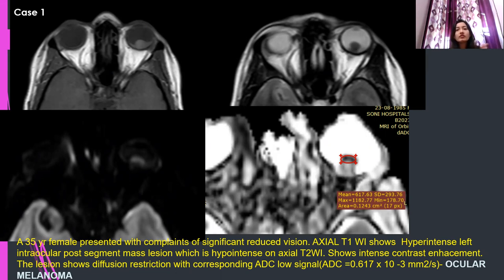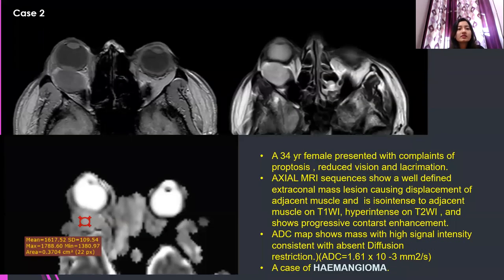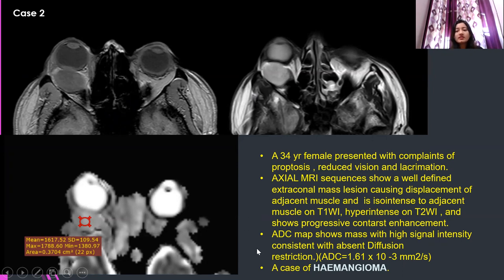Case 2: a 34-year-old female presented with complaints of proptosis and reduced vision. Axial MR sequences show a well-defined extraconal mass, which is hypointense to muscle on T1 and hyperintense on T2, showing increased diffusion with increased ADC and high signal intensity on ADC map, with an ADC value of 1.61 × 10⁻³ mm²/s. It was a case of cavernous hemangioma, a benign lesion.